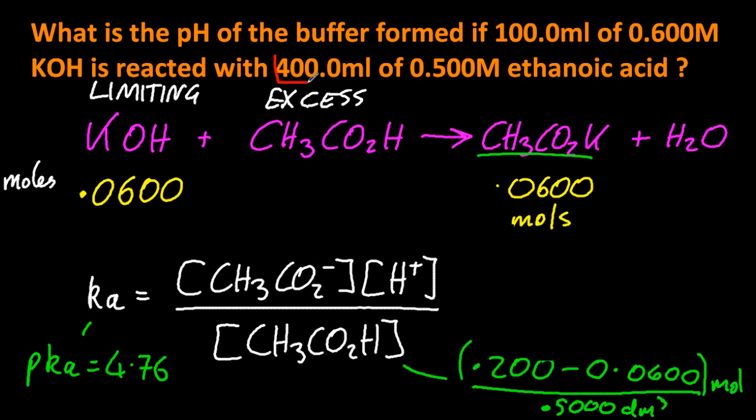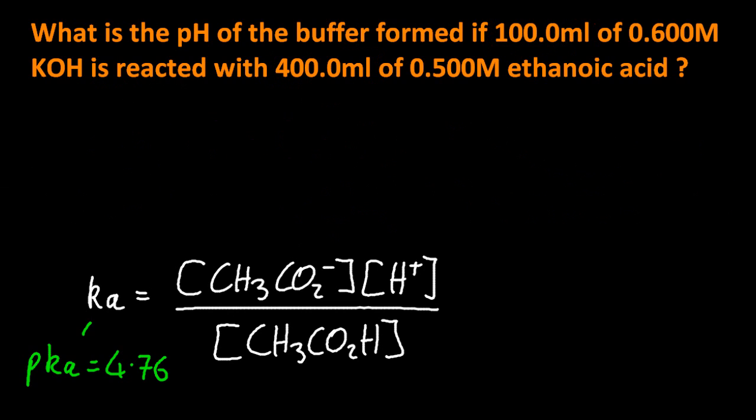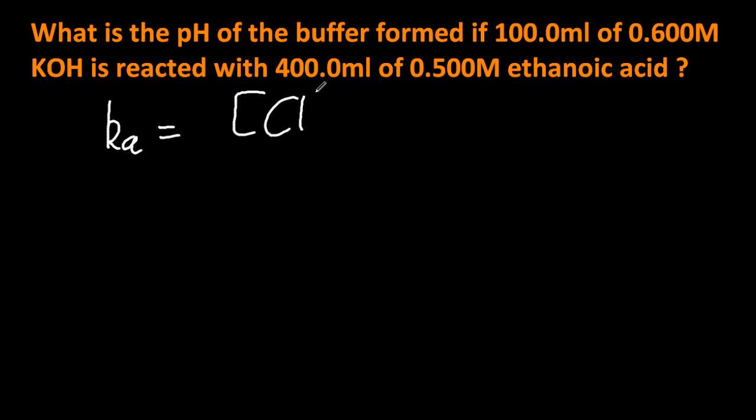Converting the milliliters to decimetres cubed, of course. How did I get the 0.5 decimetres cubed? Well, that's the total volume. And then we need to perform a similar calculation to work out the concentration of the ethanoate ion. So I've got 0.06 moles of that made at the end, and divided by the total volume. And there, again, you're assuming that all of the ethanoate comes from the salt, and none is coming from the weak acid. That's an assumption.